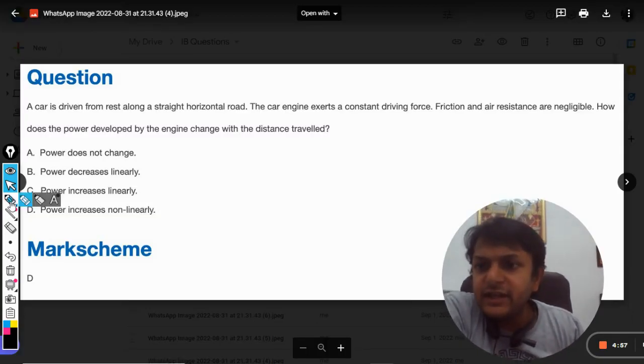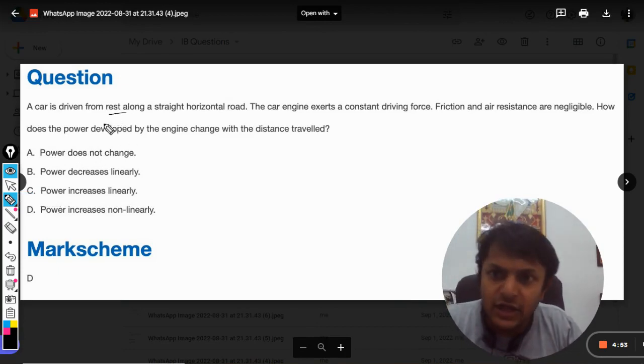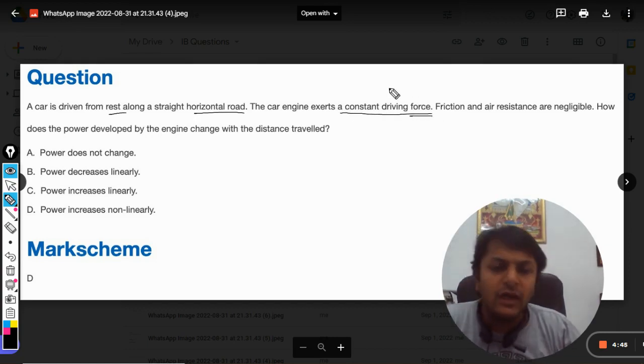Okay dear students, let us see what is happening in this question. A car is driven from rest along a straight horizontal road. The car engine exerts a constant driving force. There are two types of questions.